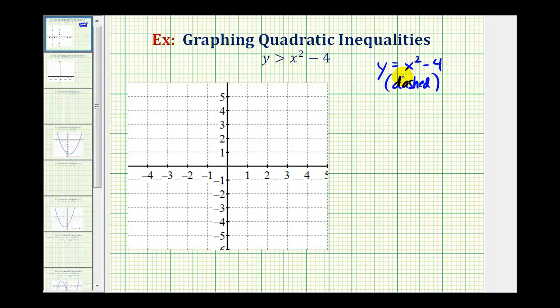Now we should recognize that this is the graph of y equals x squared shifted down four units. But just in case we don't, we can always make a table of values.